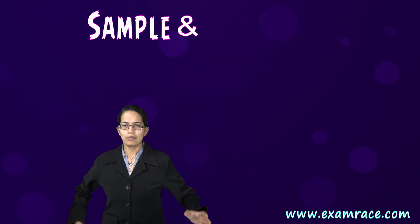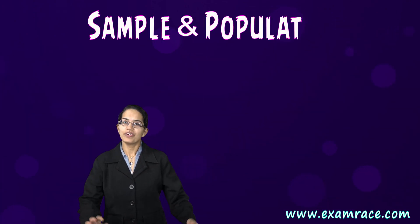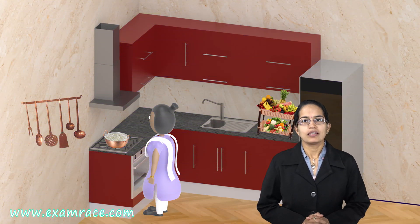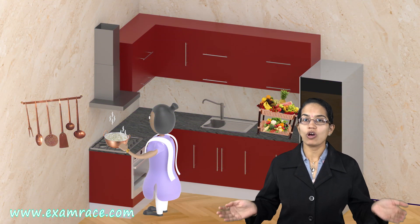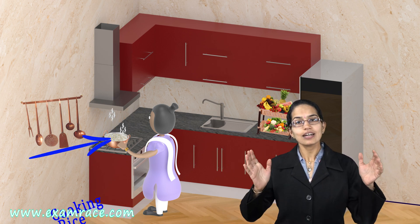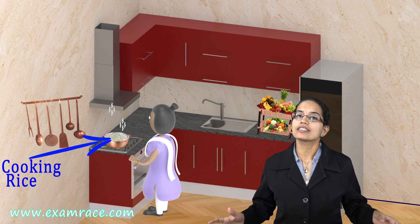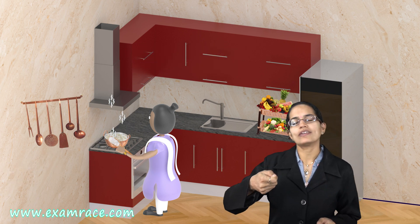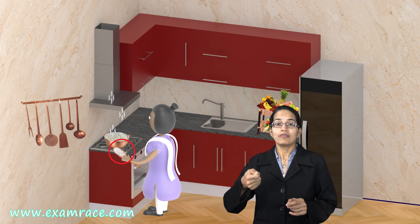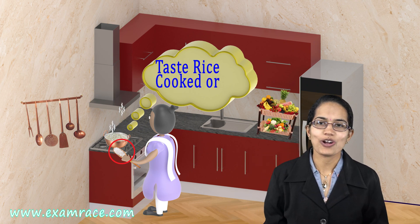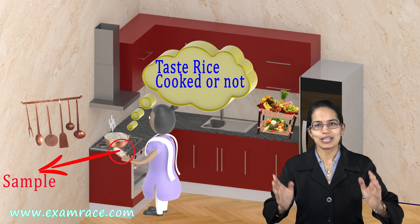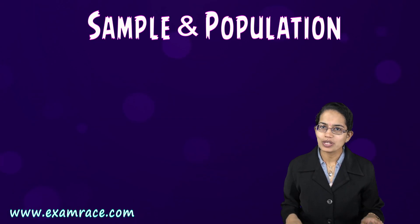Talking about sample and population, a very good experiment: I am cooking some rice. If I take the whole of the pot — the rice in the container — it is the population. And when I try to taste one spoon of that, saying whether the rice has been cooked or not, what is that? That is a sample. This is a very fundamental understanding of the population and the sample from a population.